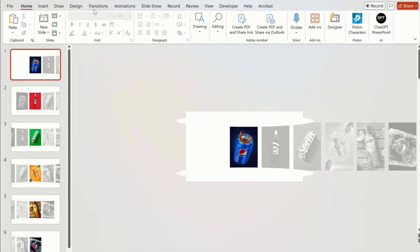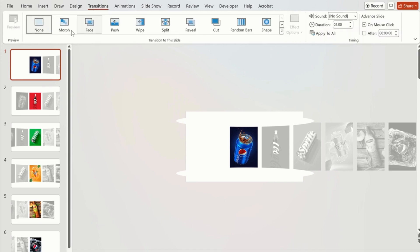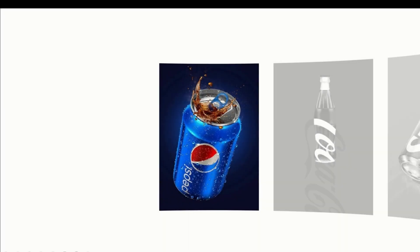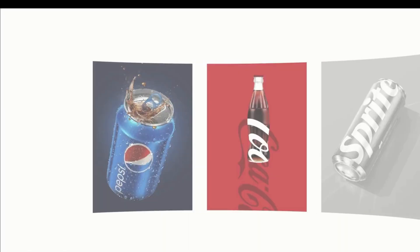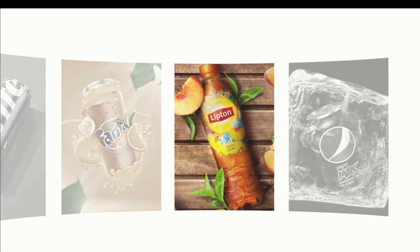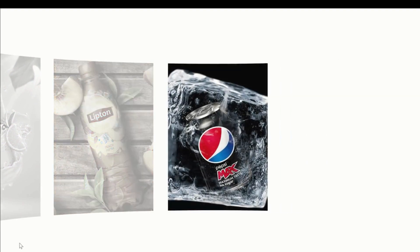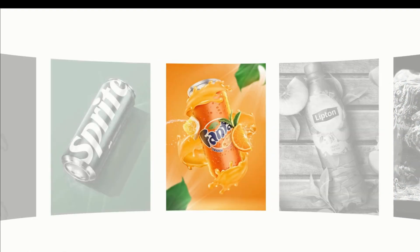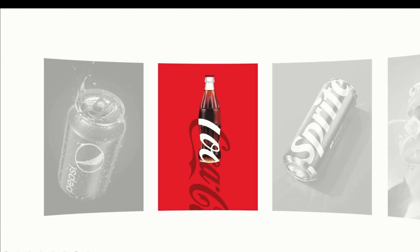Now we are going to apply Morph transition to all these slides. On the first slide, go to the Transitions tab and click on Morph transition. Change the duration to 1.50 and select Apply to All. Now click on Slide Show to see how it looks. You can see how the slides are moving smoothly forward and backward — that is due to the Morph transition.